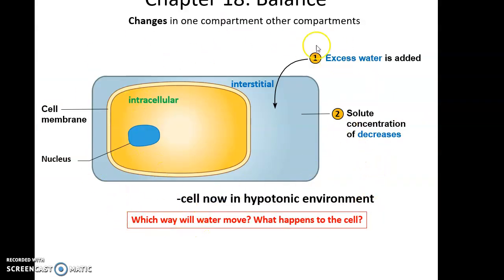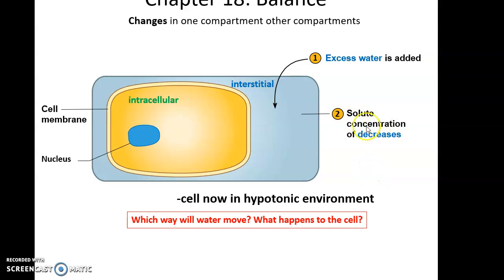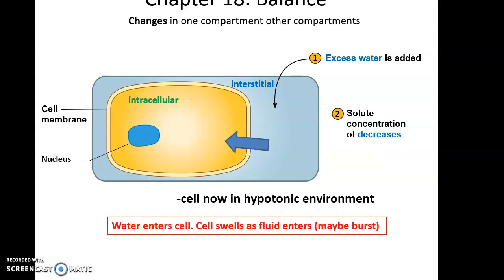When we change the composition of the environment in one compartment, it will affect the composition of fluids in other compartments. For instance, add more water to the interstitial compartment - the concentration of solutes decreases, creating a hypotonic environment for the cell. Water will then move into the cell, causing the cell to swell, and the cell may even burst or lyse.